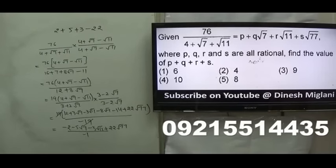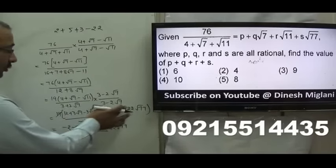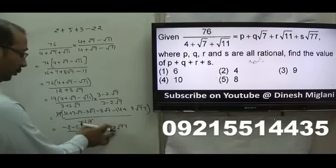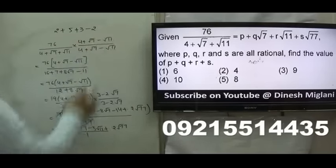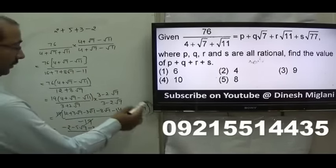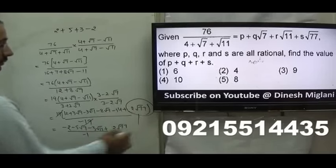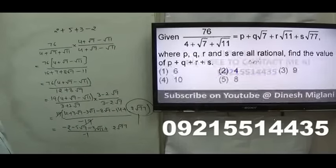There was a mistake earlier — when you multiply, it should be 2√77, not 22√77. The corrected value of S is −2, giving P + Q + R + S = 2 + 5 + 3 − 2 = 8. The fifth option is my answer.